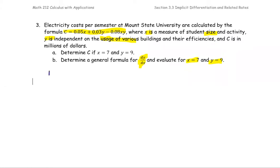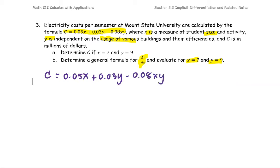For the cost function in the form of 0.05 times X plus 0.03 times Y minus 0.08 times X and Y, we can see C depends on both X and Y. So we call this an implicit form.